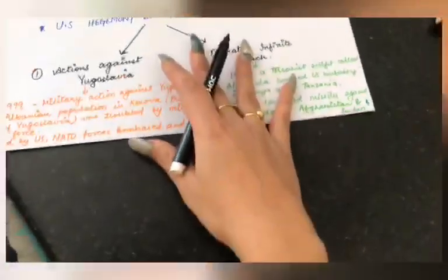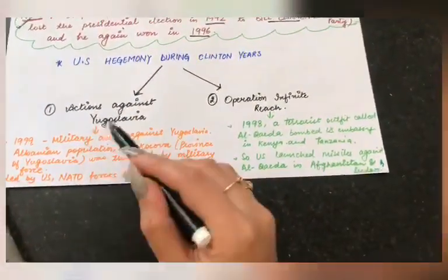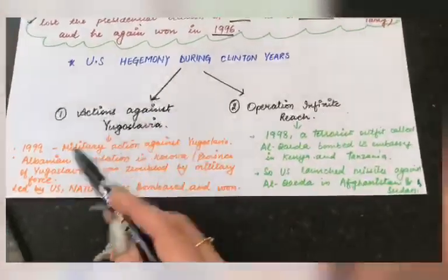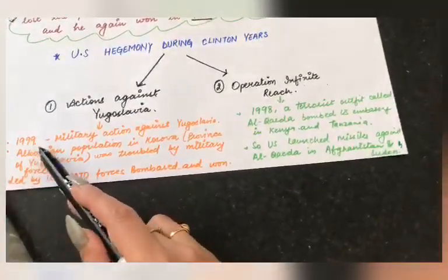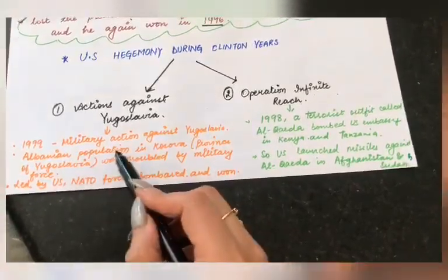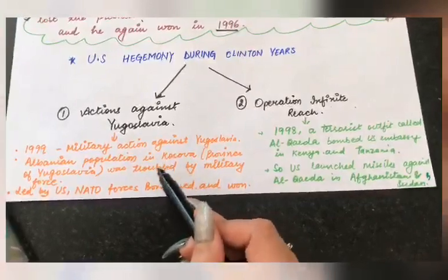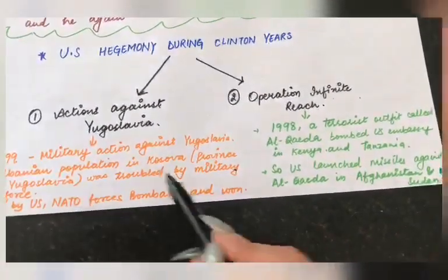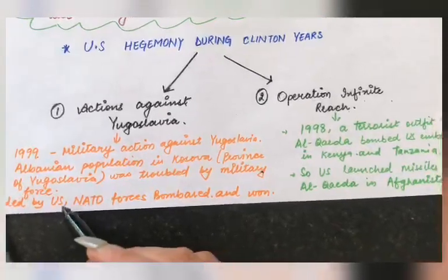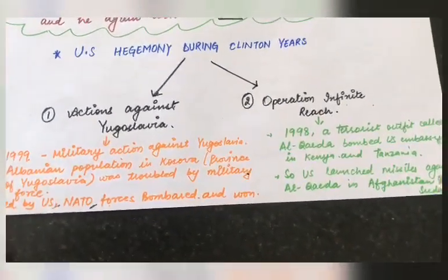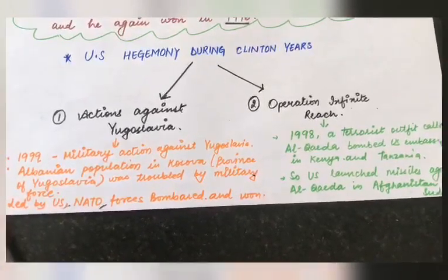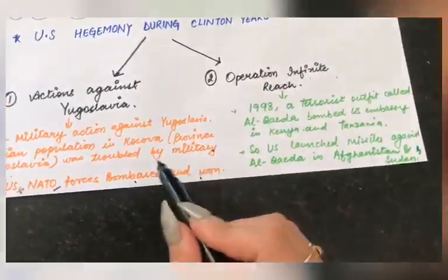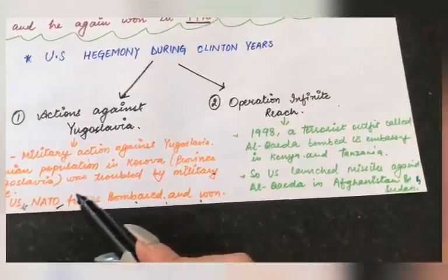Talking about the US in the Clinton years: there were two major actions. The first was the action against Yugoslavia, and the second was Operation Infinite Reach. Regarding the action against Yugoslavia: in 1999, military action was taken against Yugoslavia. In the Kosovo area — a province of Yugoslavia — the Albanian population was facing a lot of problems due to military forces. The US, leading NATO (the North Atlantic Treaty Organization), took action through bombarding Yugoslavia, and the problem of the Albanian population was sorted out.